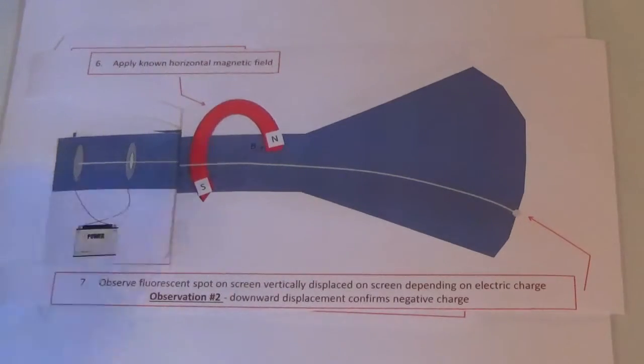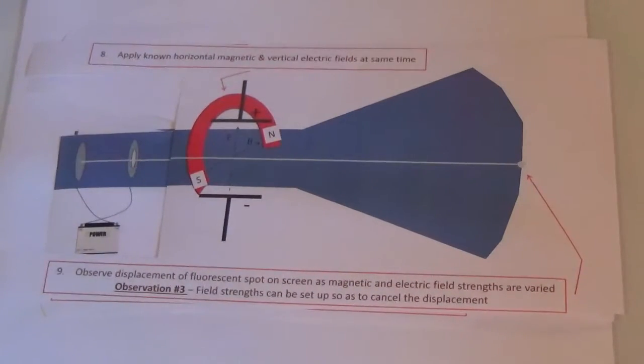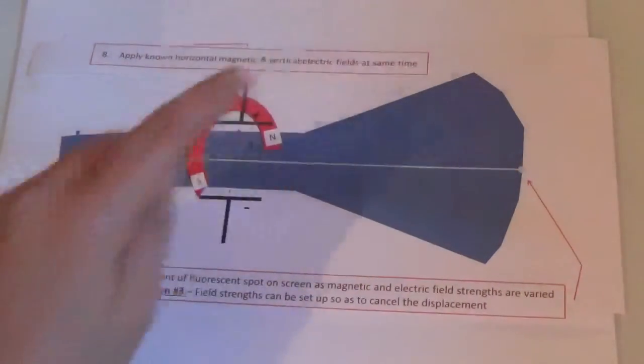If we apply the electrical charge and the magnetic field simultaneously, the fields can be set to cancel the displacement, creating a straight ray, so there is no movement up or down.